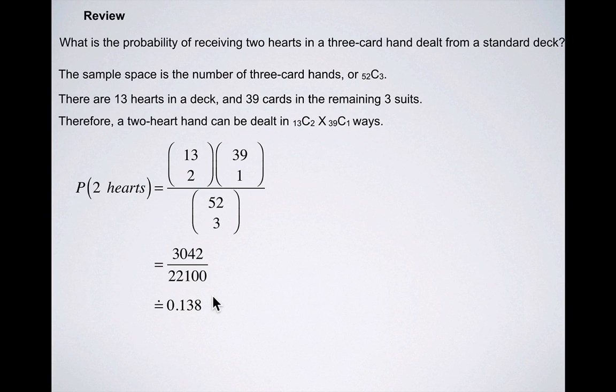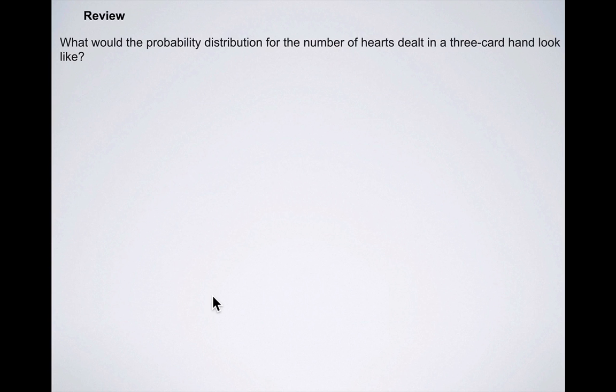Now, the next question is, what would the probability distribution for the number of hearts dealt in a three-card hand look like? When we talk about a probability distribution, we're interested in what is the probability of getting zero hearts, one heart, two hearts, or three hearts? We've already calculated the probability of getting two hearts in a three-card hand.